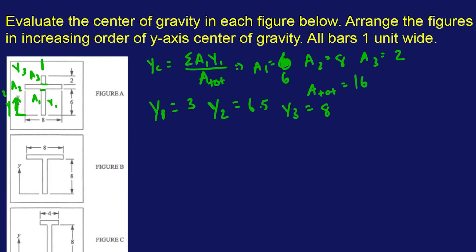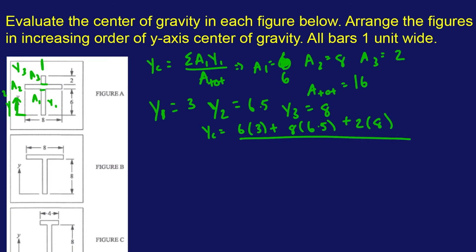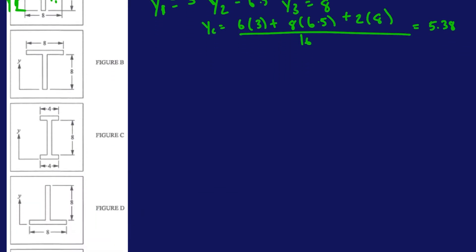Now we can follow the formula. YC is the sum of all these: 6 times 3, plus 8 times 6.5, plus 2 times 8 — this is basically the weighted average — all divided by 16. Doing the calculation, that should equal 5.38. Figure A has a centroid of 5.38.